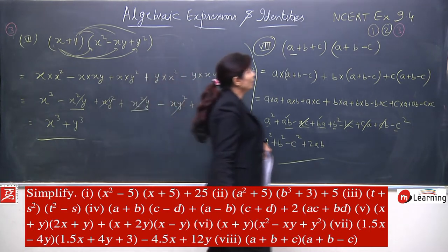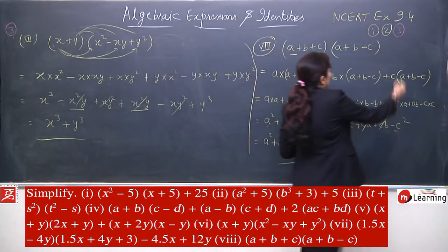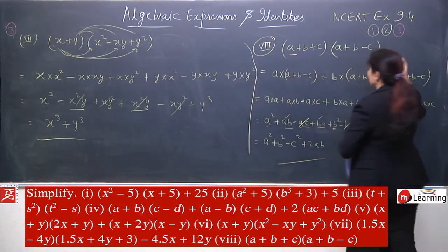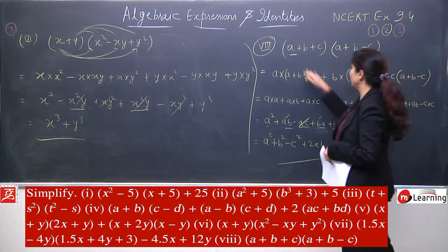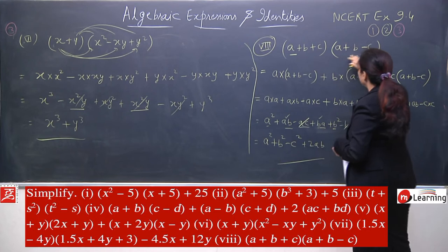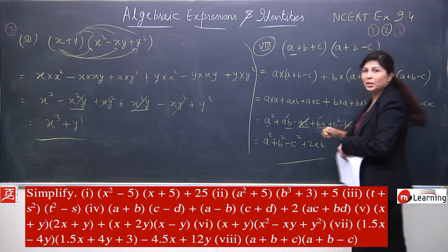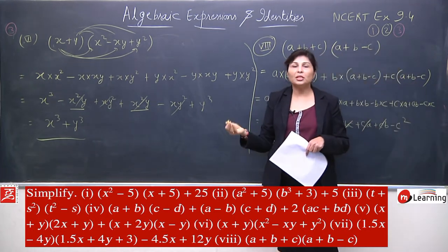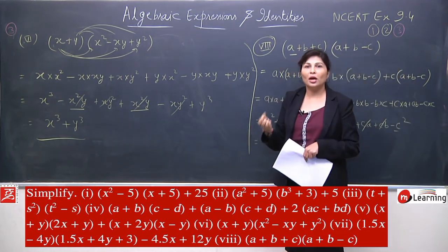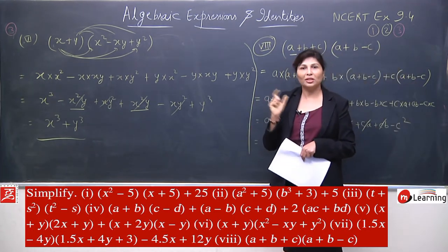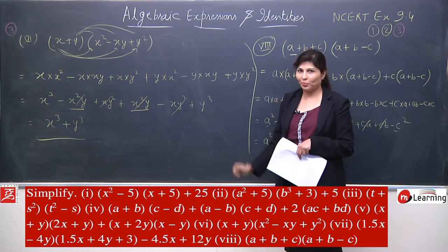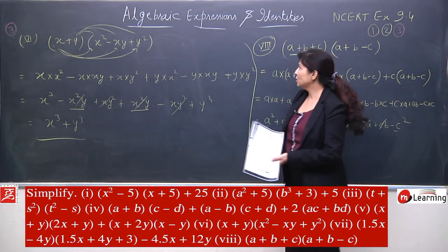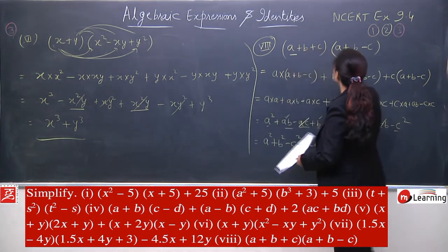Students, we solved so many questions — at least 6 in this exercise. They kept increasing the number of terms, but the multiplication was very easy and the answers came out very small. So this was your Exercise 9.4. Now I am moving to Exercise 9.5.